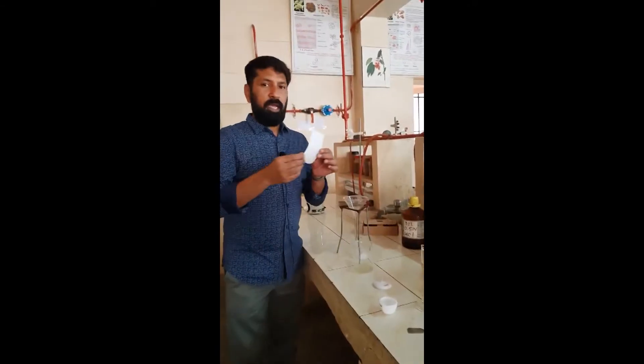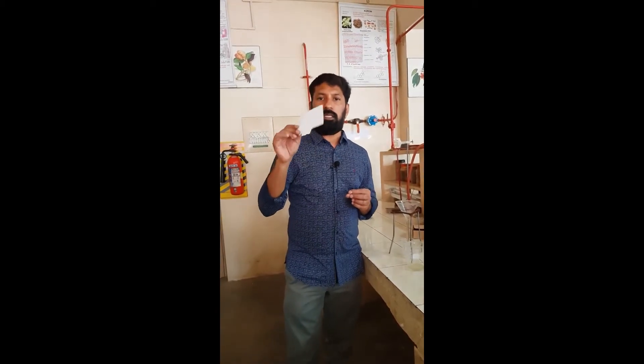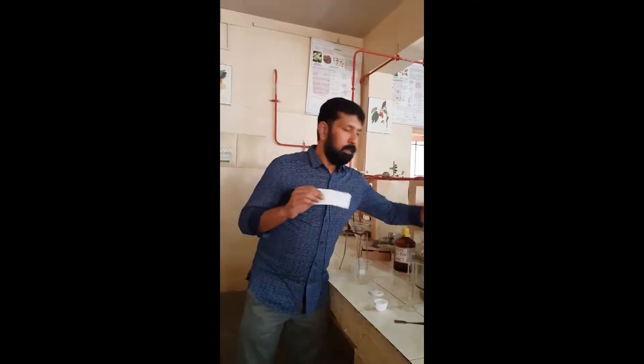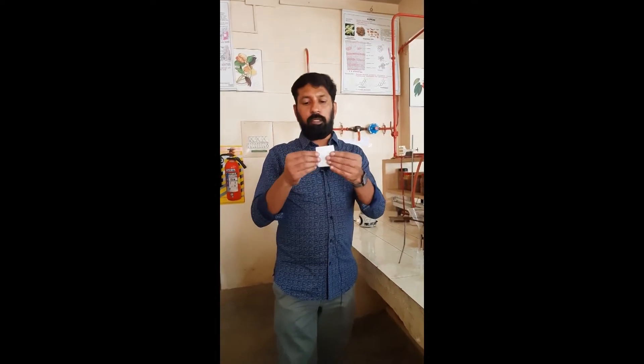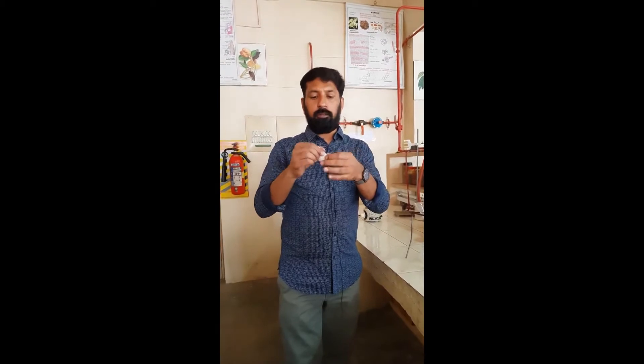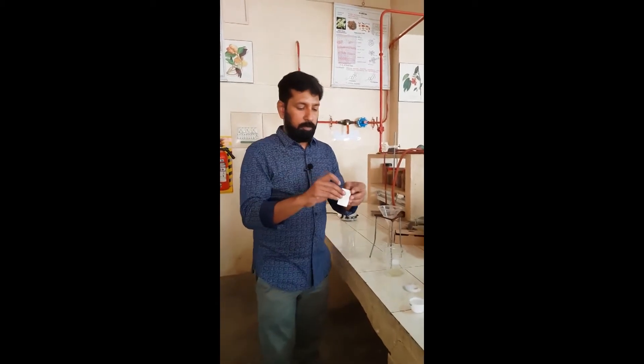Now what we have to do: take one ashless filter paper. This is the ashless filter paper. What is the advantage of ashless filter paper? If you heat this ashless filter paper and burn it into ash, it does not give any ash. This is a normal filter paper — if you make it into ash, it gives ash. But the ashless filter paper does not give any ash. Now take this ashless filter paper and fold it into 4 parts. Fold it and keep it in the funnel, then pour this solution into the ashless filter paper slowly.